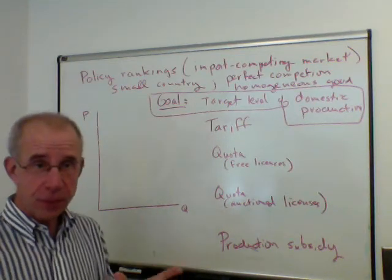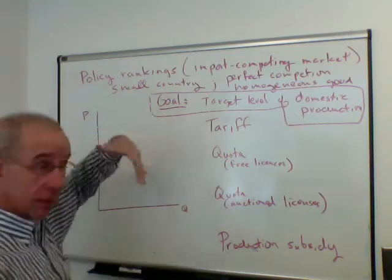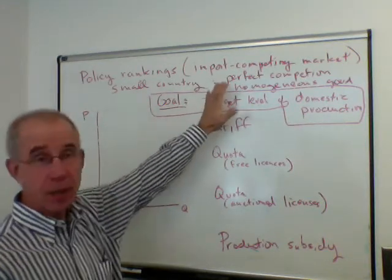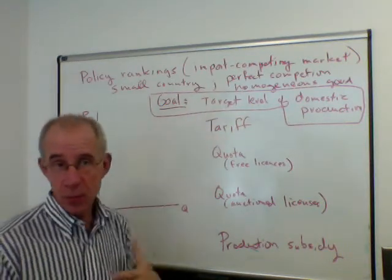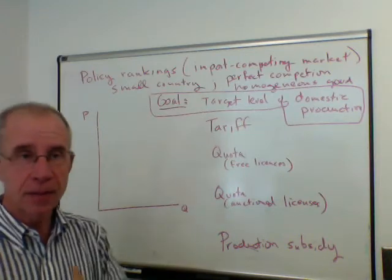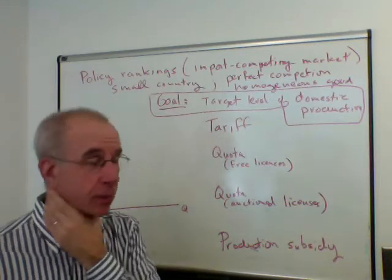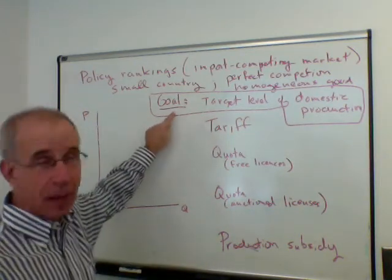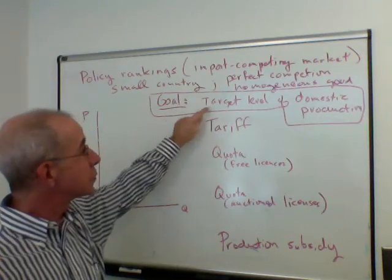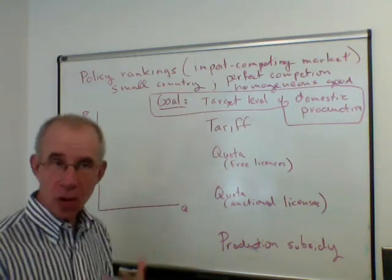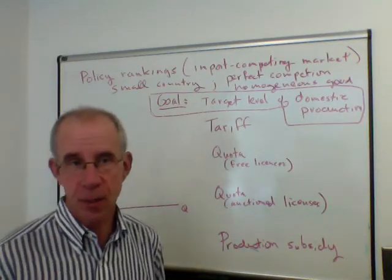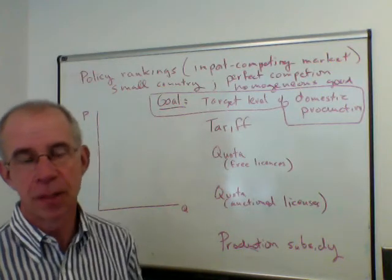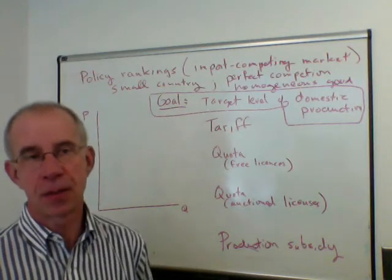The first thing we want to do is identify the circumstance. We're looking at a small country, perfect competition, homogeneous goods — keeping it as simple as possible. And the goal I'm going to pursue is trying to get a target level of domestic production — some particular increase in domestic production.